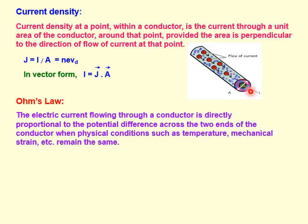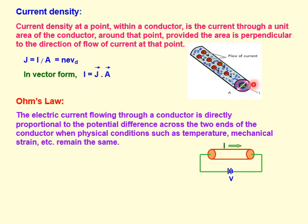The next topic is Ohm's law, which you are familiar with from class 10. If we have a conductor connected to a battery, as we increase the battery potential, the current flowing through the conductor also increases. This means current is directly proportional to the potential difference, keeping the physical parameters of the conductor — temperature, area, length — constant. This is Ohm's law.